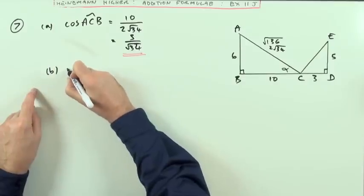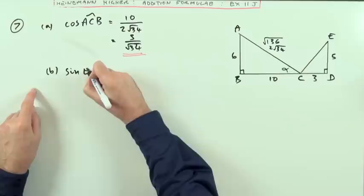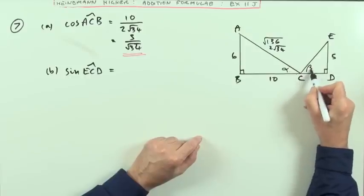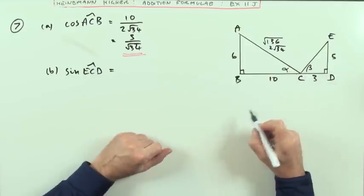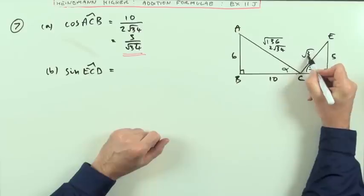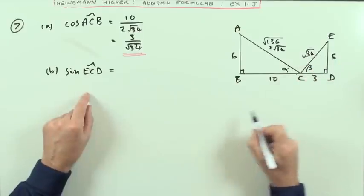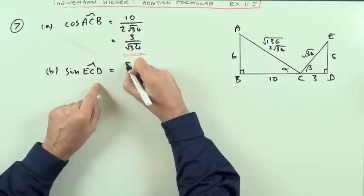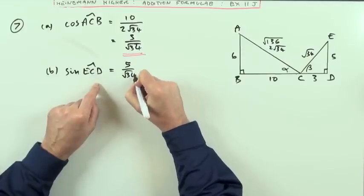Part B was, what's the sine of ECD? Well, ECD is this angle. I'll call that one beta. I'm not going to use it just now. Well, that's obviously the same as that. That must be the 34 then. So that's root 34. So ECD is going to be the opposite, which is 5. So it's actually the same thing. It's 5 upon root 34.